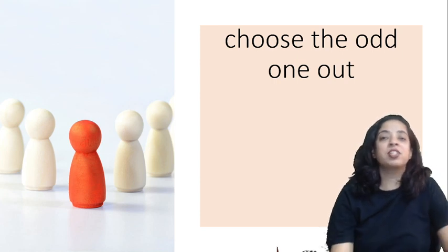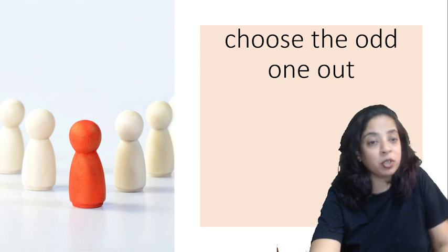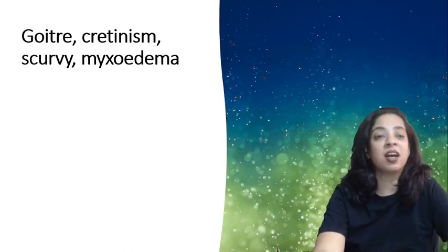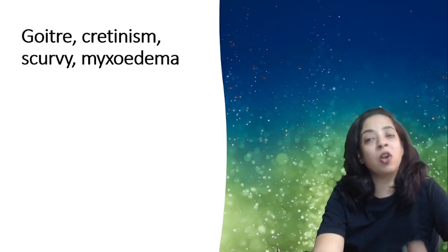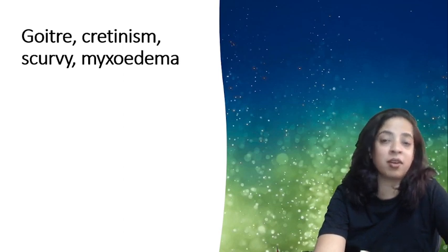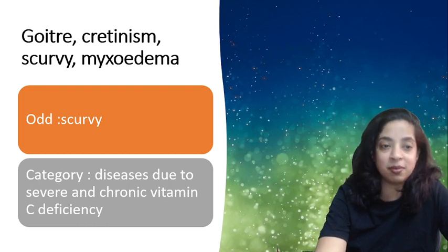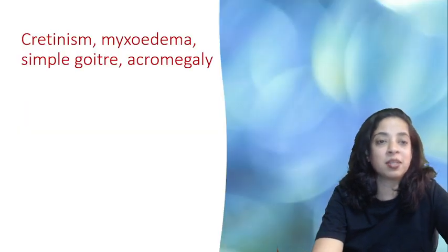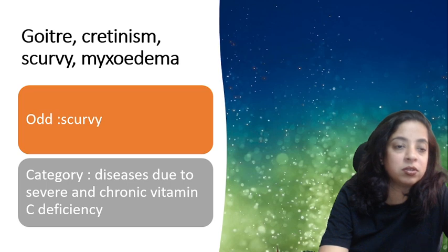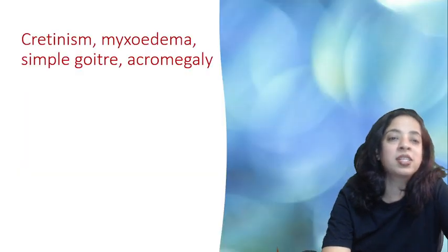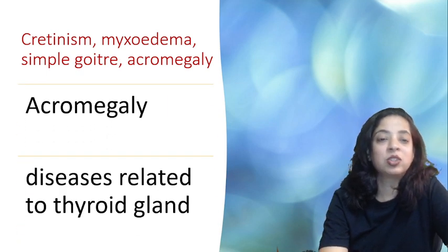Now the next type of questions is 'Choose the Odd One Out.' These are very important questions and students make a lot of mistakes. You have to mention which is the odd one out and the reason — the category of the remaining ones. First set: goiter, cretinism, scurvy, myxedema. The odd one out is scurvy, which is a disease due to severe and chronic vitamin C deficiency; the others are due to deficiency or excess of hormones. Second set: cretinism, myxedema, simple goiter, acromegaly. The odd one out is acromegaly; the others are diseases related to the thyroid gland.